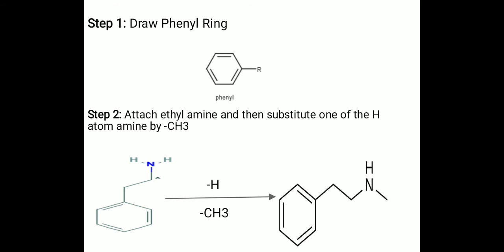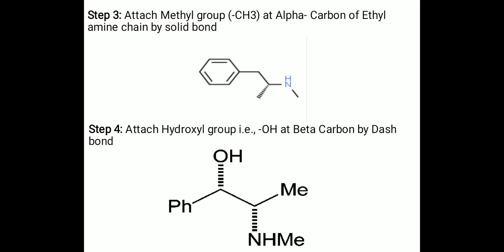Here are the four steps to remember the structure of pseudoephedrine. Step one: draw a phenyl ring. Step two: attach ethylamine and then substitute one hydrogen atom on the amine with a methyl group, forming N-methyl phenylethylamine. Step three: attach a methyl group at alpha carbon of the ethylamine chain by solid bond. Step four: attach a hydroxyl group at beta carbon by dash bond, forming pseudoephedrine.